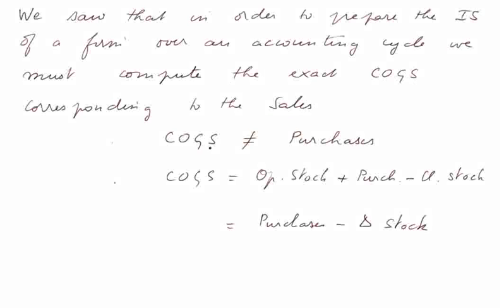Usually the cost of goods sold is not equal to the purchases of the cycle. We may have purchased less than we sold and depleted the stock a bit, or we may have purchased more than what we sold and increased the stock. The formula is: COGS equals opening stocks plus purchases during the cycle minus closing stocks at the end of the cycle.